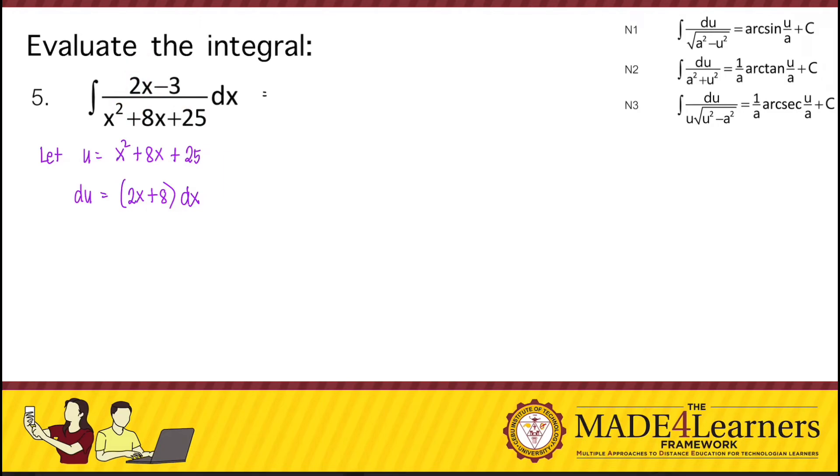So what do we do? We can rewrite our numerator as 2x plus 8 plus a certain number that would give us negative 3 here over x squared plus 8x plus 25 dx.